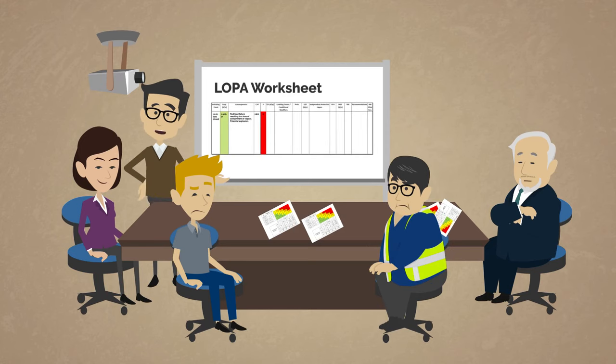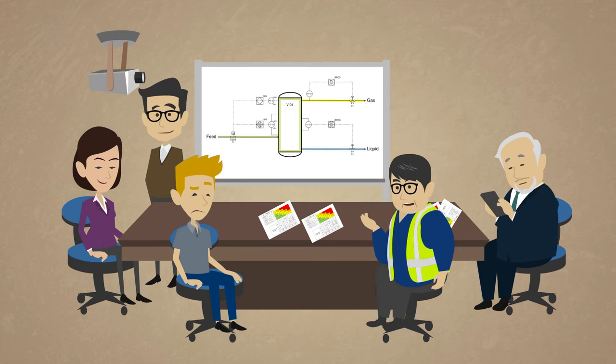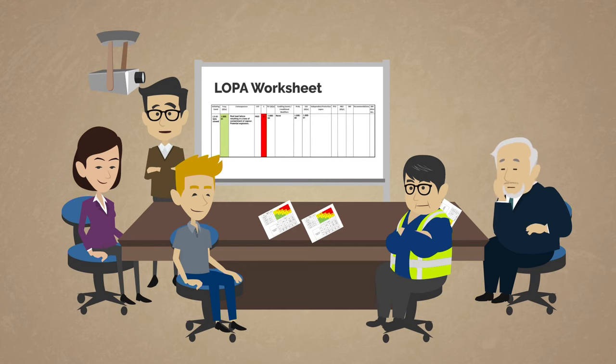How often do we expect personnel to be in the area? This will not be a highly trafficked area of the facility. However, I think that it's unlikely we could say that someone will be in the area less than 10% of the time just based on operator presence. Alright, then we can't take credit for a conditional modifier.